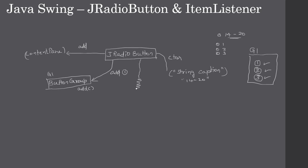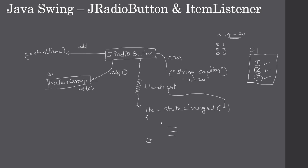Just like the AWT radio button, JRadioButton also produces an item event. This item event is delivered to the ItemStateChanged method, where you place your handler code.